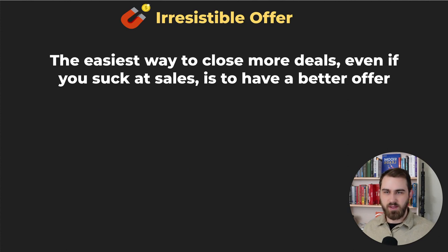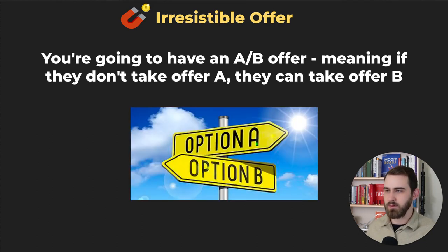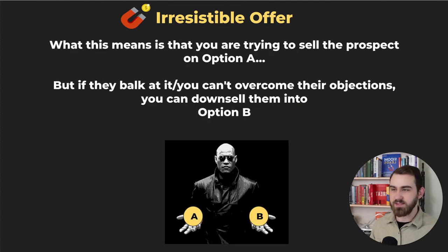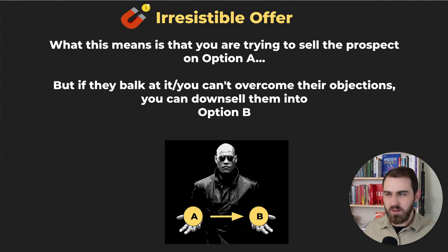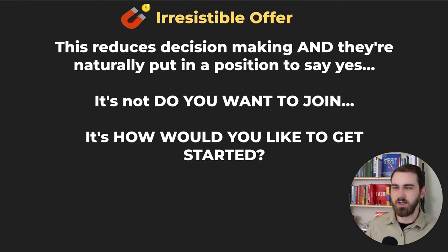Now onto the irresistible offer. The easiest way to close more deals — even if you're not great at sales — is to have the best offer on the market. The offer structure we've found with the highest close rate is the assumed sale with an A/B option. If they balk at option A and you can't overcome their objections, you can downsell them into option B. It's 'would you like this one or this one?' — it reduces decisions and puts prospects in a position where they feel in control.